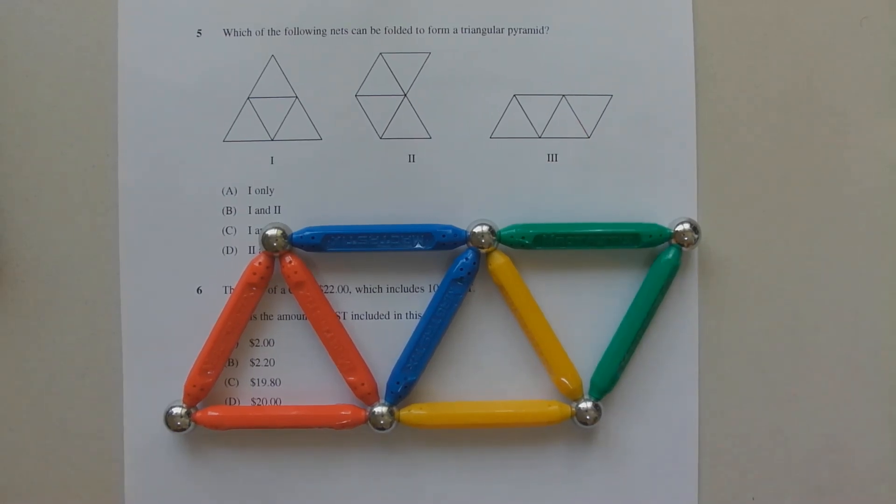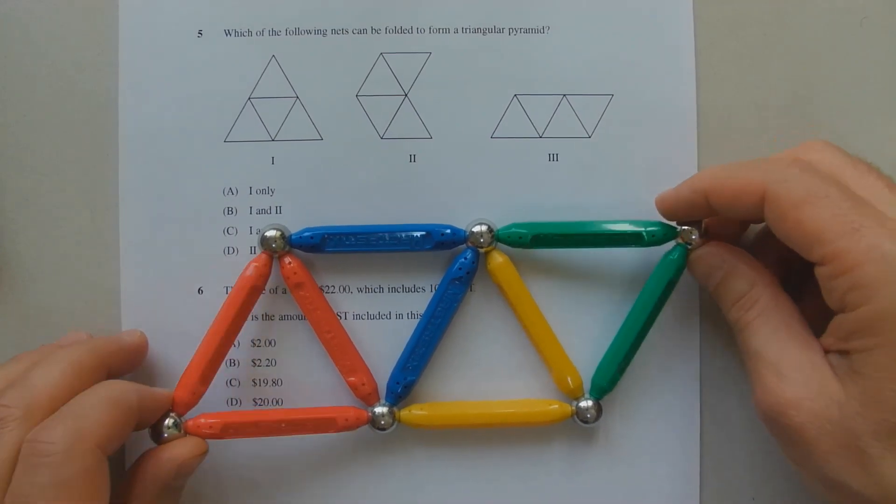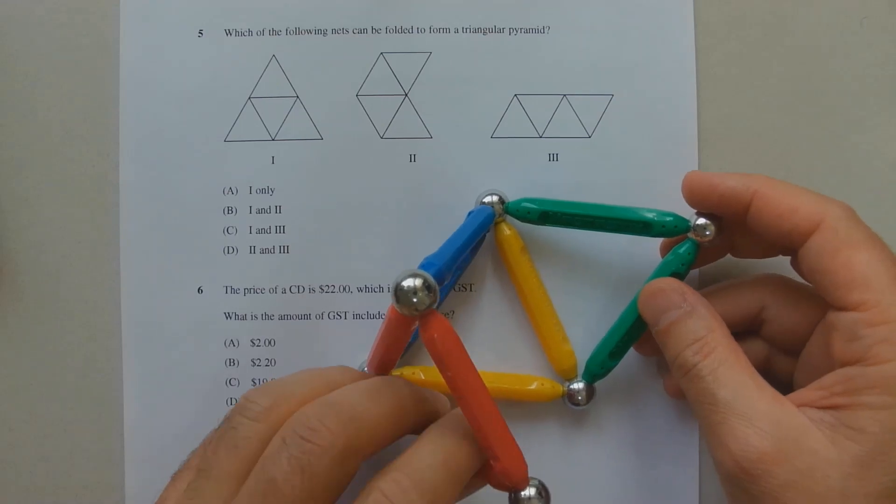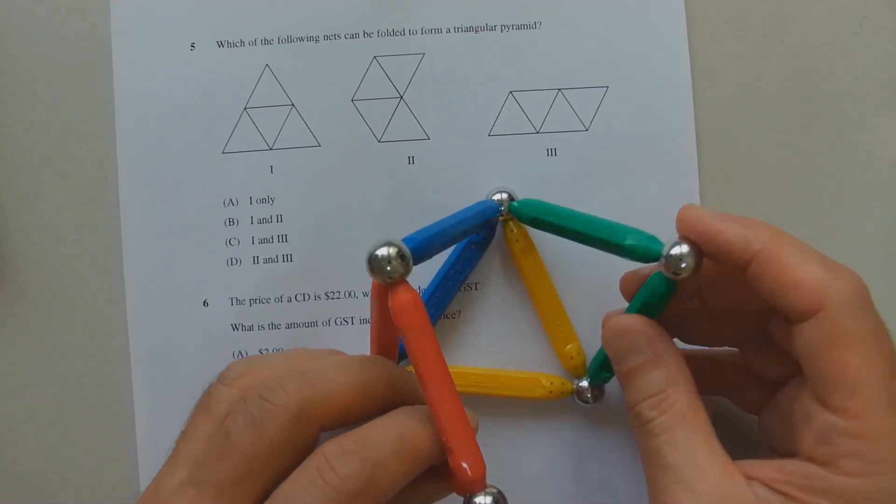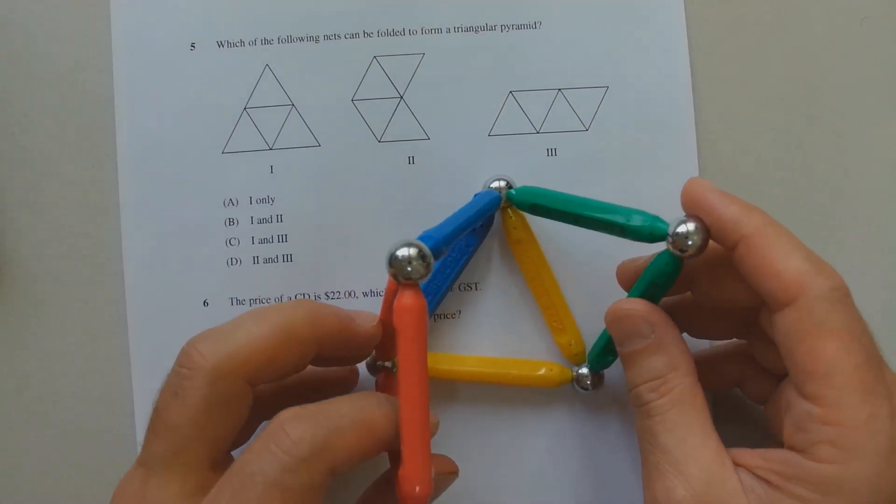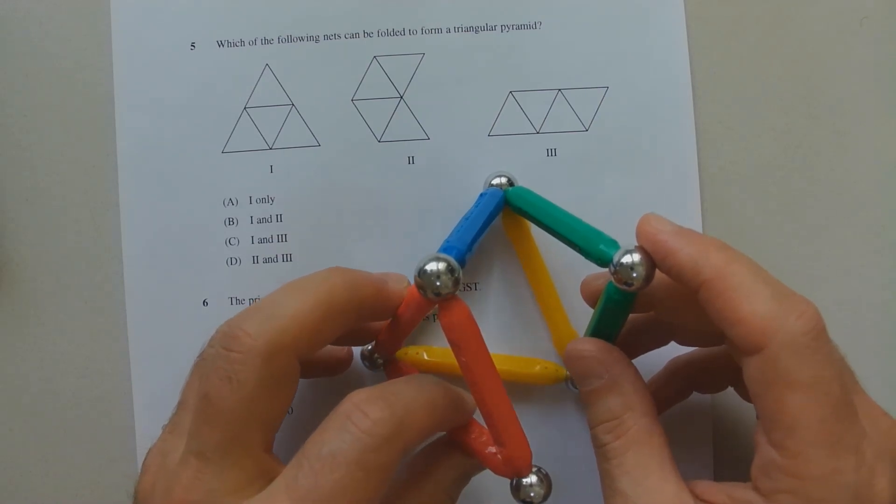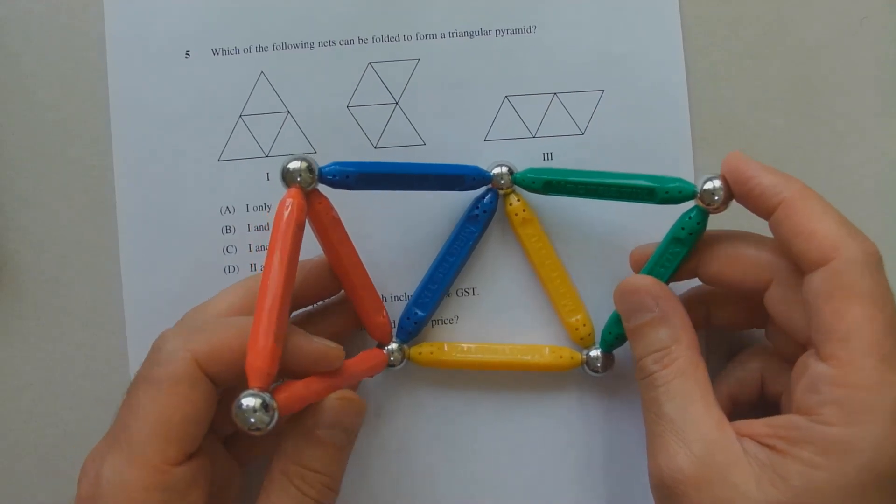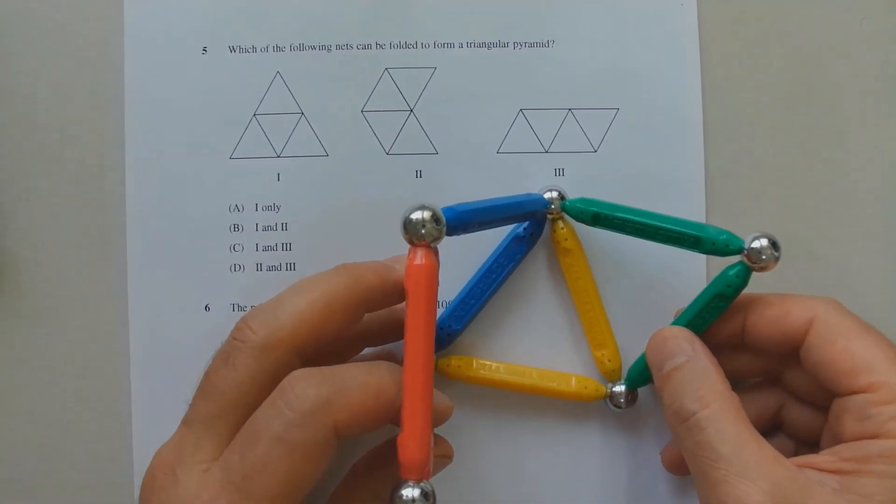So let's try and fold this in such a way that it forms a triangular pyramid. So we might fold it up this way, that way, and this one comes up there. I think this will work. So unfortunately these magnetic sticks will not allow me to fold it all the way so as to connect all the relevant vertices, but I can see that this will clearly form a triangular pyramid.